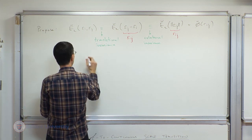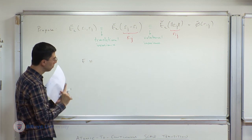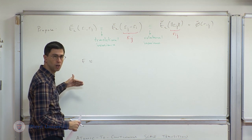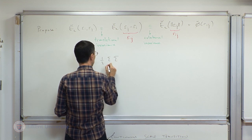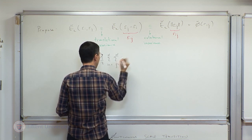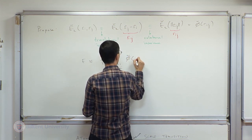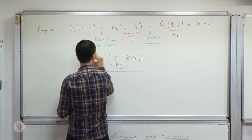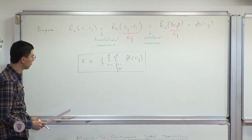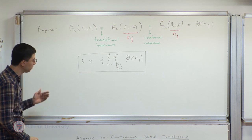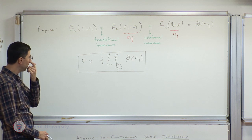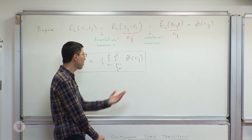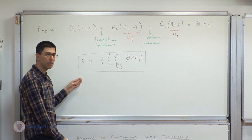That is the pair interaction for one pair. For the whole setup, following the assumptions we made, we can approximate the overall energy of the atomic ensemble through pair interactions: one-half times the sum over i equals 1 to n, and j equals 1 to n with j not equal to i, of phi-tilde evaluated at the magnitude of r_ij.